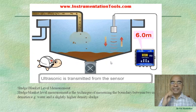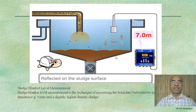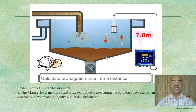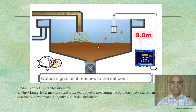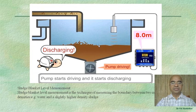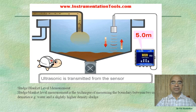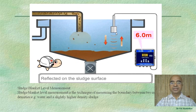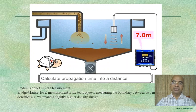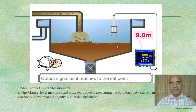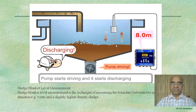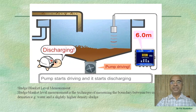A sludge level measurement system is shown. In industries, we frequently need to measure the sludge level as it changes — for example, between 6, 7, and 8 meters. This also uses the ultrasonic method: ultrasonic waves are transmitted and reflected back from the surface of the sludge, and thus the sludge level is measured.